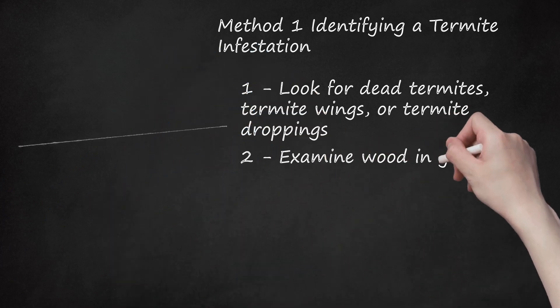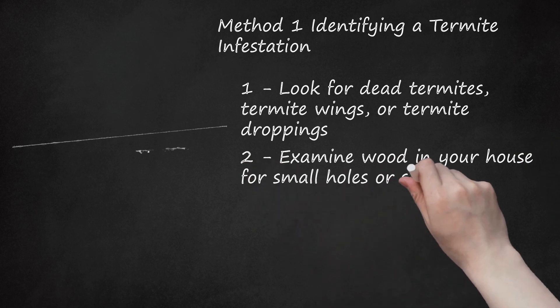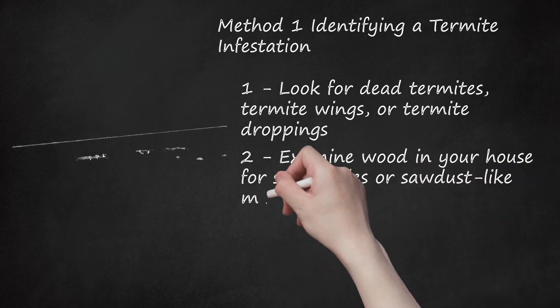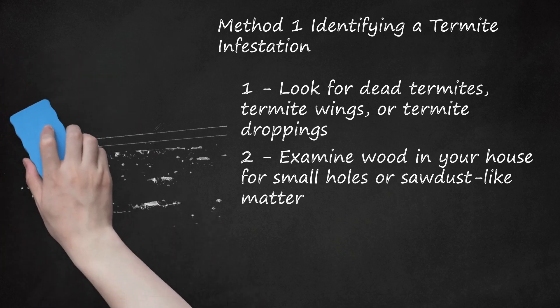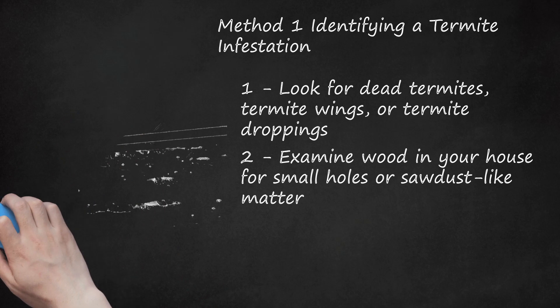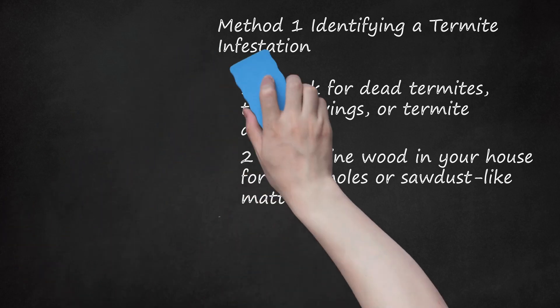Step 2: Examine wood in your house for small holes or sawdust-like matter. Termites like to live in dark, damp places and will often bore into wet wood to find a home. Look for sawdust-like material around any holes or cracks around your house. The sawdust-like matter is known as frass, which is a form of termite excrement. Probe the small holes with a pen or other thin object to see if you can locate an exit hole for the termites.